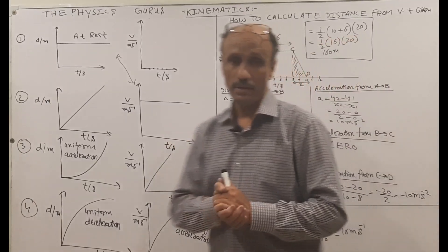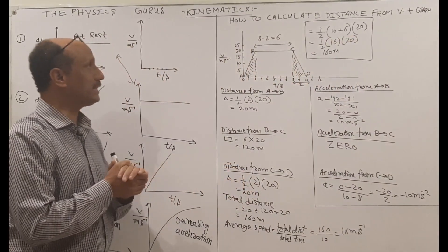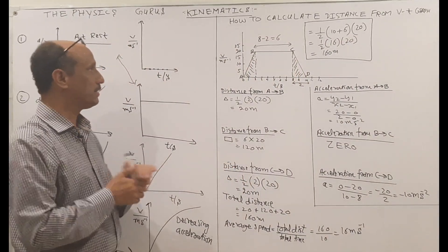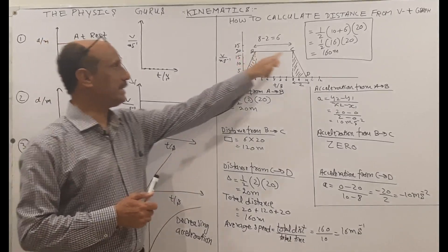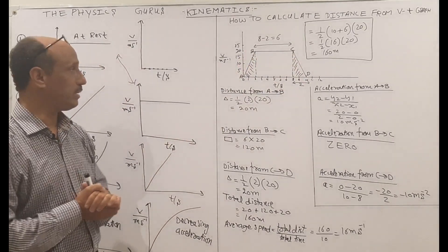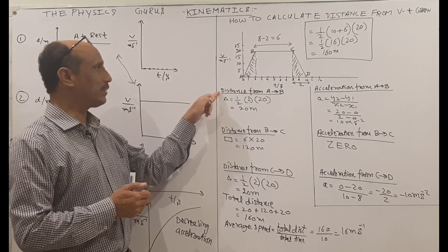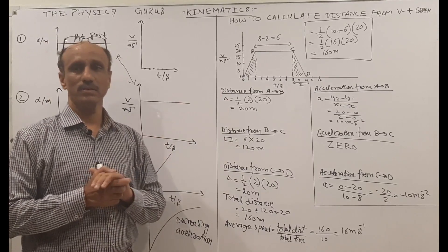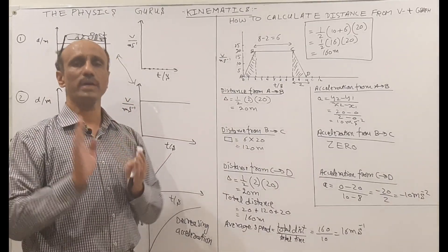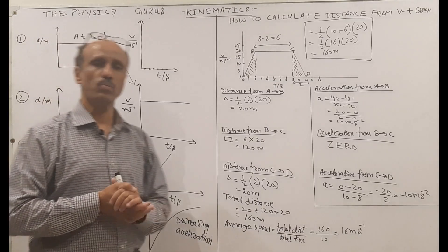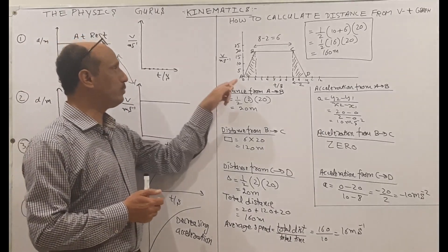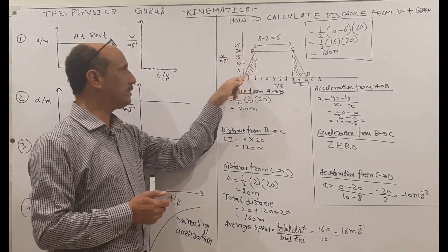Now, how can we calculate the distance from the velocity-time graph or speed-time graph? Suppose the object starts here and we have this graph given in the paper, or tabulated values from which we draw the graph. The distance from a VT graph is always calculated from the area under the graph. Whatever shape the shaded region is, we find the area of that particular shape. For example, from A to B I have shaded this region.